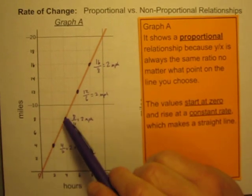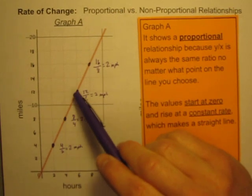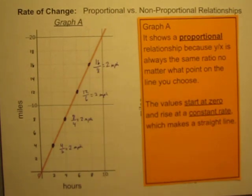Four divided by two is the same as eight divided by four. It's the same as twelve divided by six. It's the same as sixteen divided by eight. And this works out because the values start at zero, and they rise at a constant rate of change.